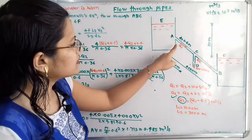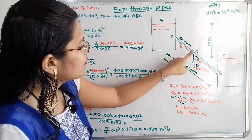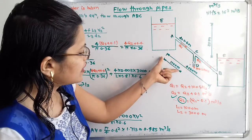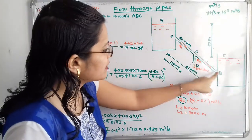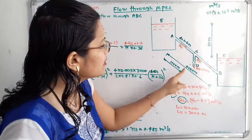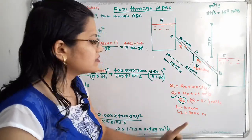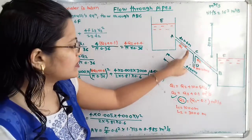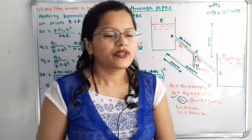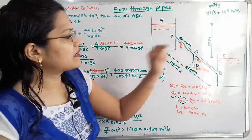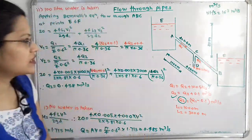For section AC, the length L1 = 1000 m. The remaining length for section CB is 4000 − 1000 = 3000 m, so L2 = 3000 m. The diameter remains the same at 0.6 m throughout.